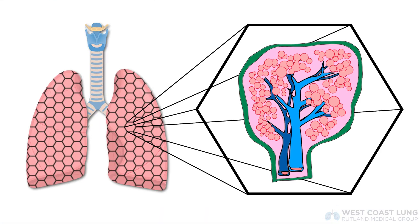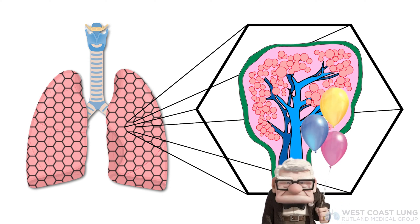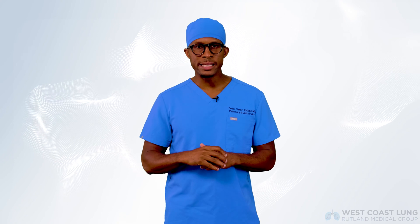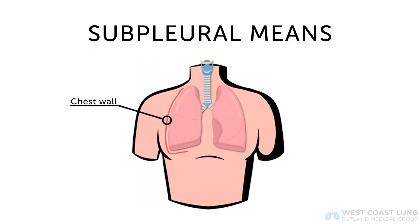Autoimmune disease can take place anywhere in the body. These specific diseases have radiographic features in the lung, and the findings on HRCT follow the same patterns described in the drug-induced lung disease episode. Remember: the lung is made of pipes and balloons stacked on top of one another. The pipes include bronchioles, arterioles, capillaries, and veins. The balloons are the alveoli. These structures form the secondary pulmonary lobule — like a Disneyland balloon man. The lobules are outlined by interstitium called interlobular septa, with the subpleural region meaning right next to the chest wall or along a fissure.